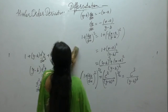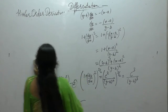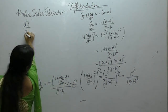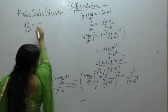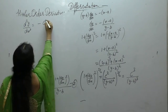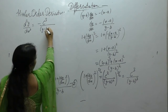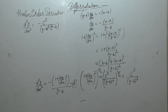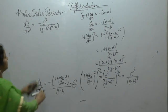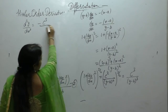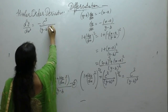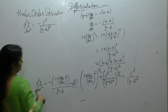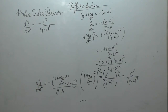So putting the value of 1 plus (dy/dx)² whole square, d²y/dx² is equal to minus c³ upon (y minus b)³ times 1 upon (y minus b), which simplifies with (y minus b) to give c³ upon (y minus b)³.